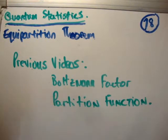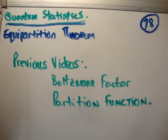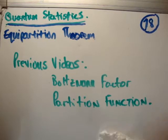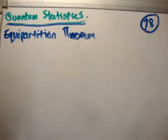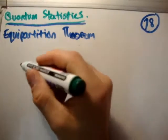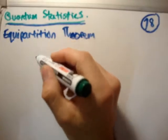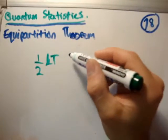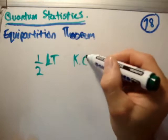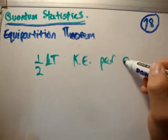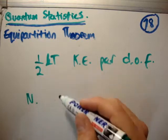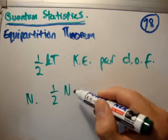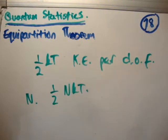I suggest the previous videos on this are the Boltzmann factor and the partition function. So I'm going to do this reasonably quickly because all I'm doing is applying the results we've seen in previous videos. So the equipartition theorem says there's 1 half k times t kinetic energy per degree of freedom. That means if you have n degrees of freedom you have 1 half n kt kinetic energy in your system. And that's what we're going to prove.